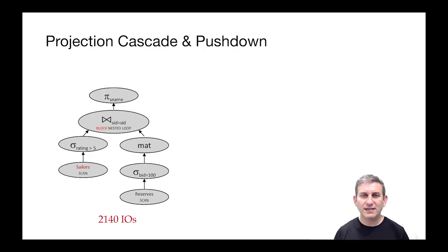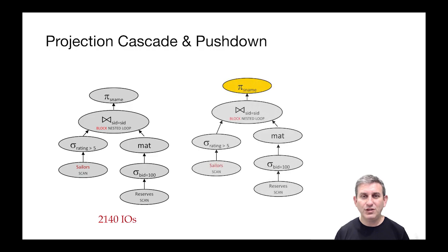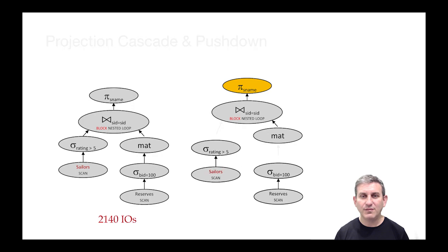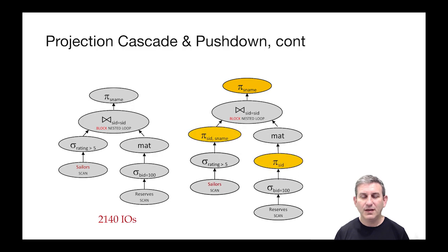We haven't done any projection cascading and pushdown yet, so let's see how that can help us. To do the pushdown, first we have to cascade the projection, so we'll add some new projections down below. On the left-hand side we're projecting to just SID and S name before the join, and on the right-hand side we're projecting to just SID.